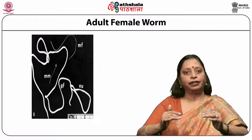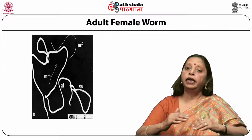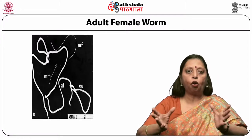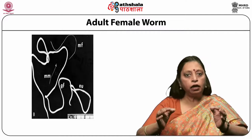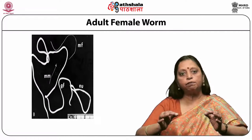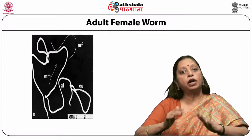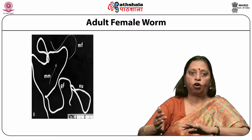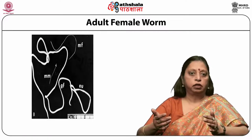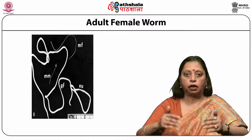The spicules are of unequal length in Dracunculus and are enclosed in a spicular sheath. They are protractile in nature — when not in use they lie within the sheath, and only during copulation do they project out to open the vulva of the female. The gubernaculum is a sclerotized thickening of the cuticle, formed from the spicule pouch, lying on the dorsal side of the cloaca to help guide the spicules. The males die after copulation and have not been reported from man, only from some experimental animals.